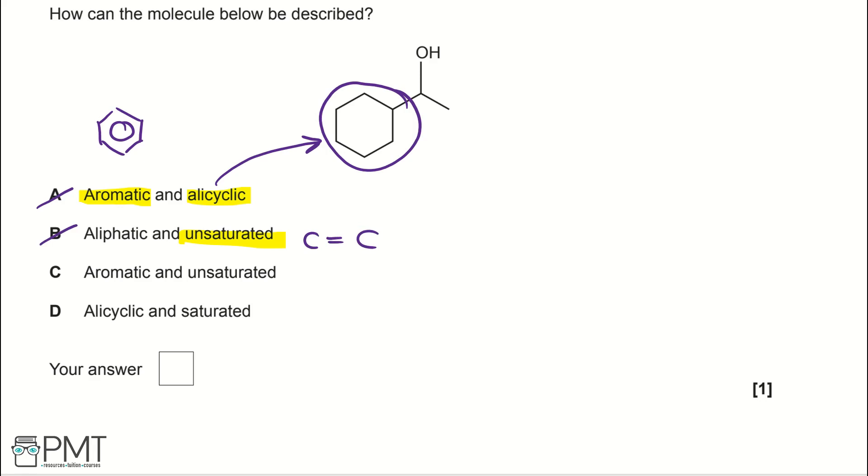In C, we're told it's aromatic and unsaturated. We've already established that it's not an aromatic molecule and it's not unsaturated, so it can't be C. Therefore, we're left with D, and that's true because a saturated molecule has no carbon-carbon double bond, which this doesn't.